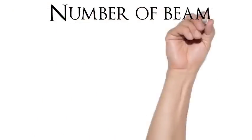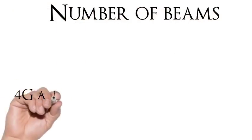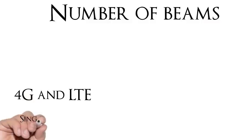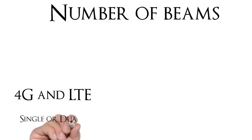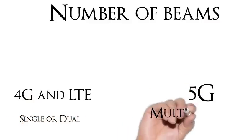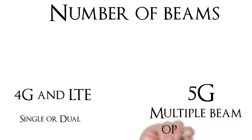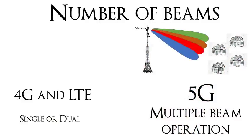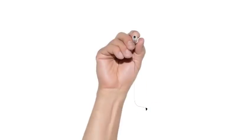Number 2: The number of beams. For 4G and LTE, there are single or dual beams. Whereas in 5G, there are multiple beams which are cast simultaneously, as shown in the figure.